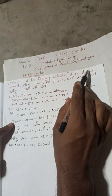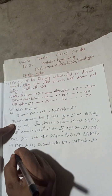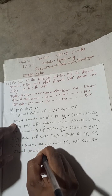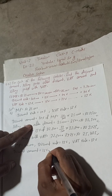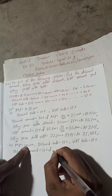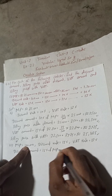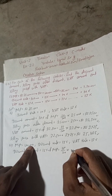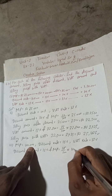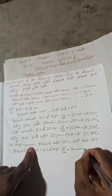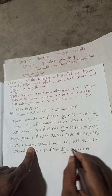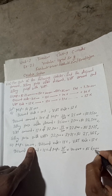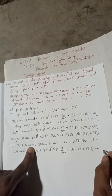Now same as before, we have to find the discount amount. Discount amount equals 15% of MP. So 15 divided by 100, multiplied by 40,000. Cancel the zeros: 15 multiplied by 4 equals 60, giving Rs 6,000 as our discount amount.